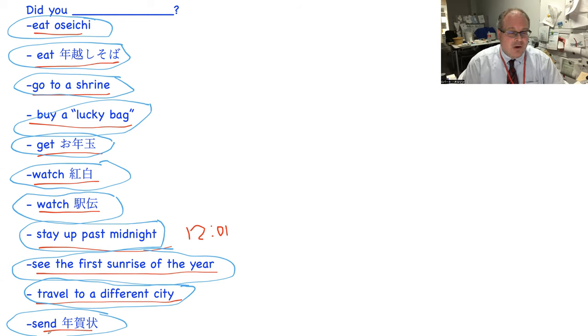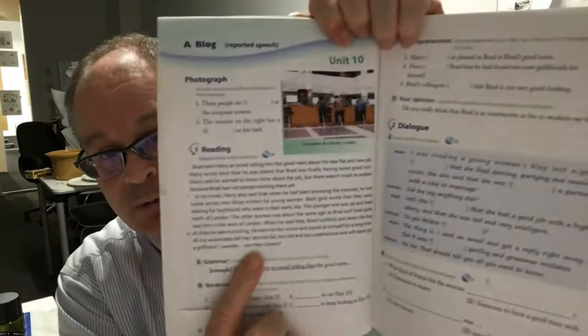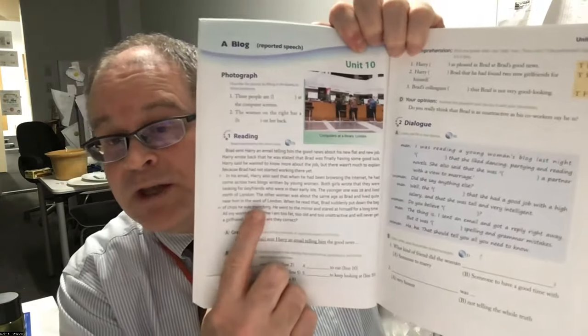Okay good. Now reviewing for the teki shiken, a couple things I want you to know. First, you have to know, this is very important, page 42 - page 42, this passage right here, yonju ni peji. You have to read this, this is very important. This will be on your teki shiken.